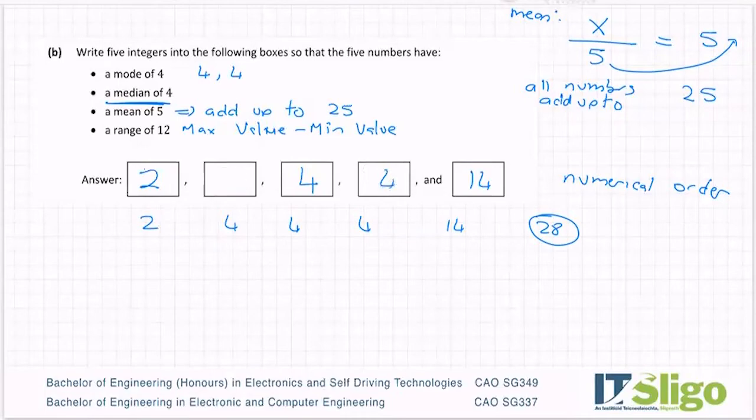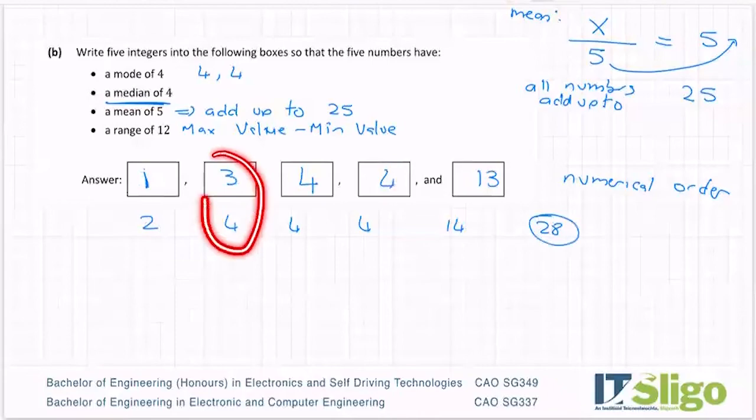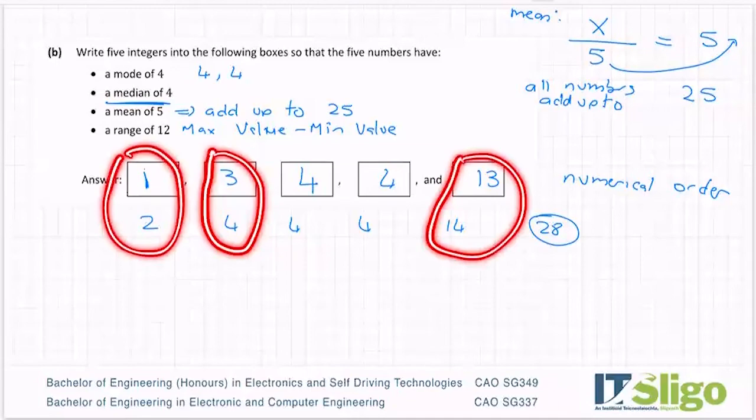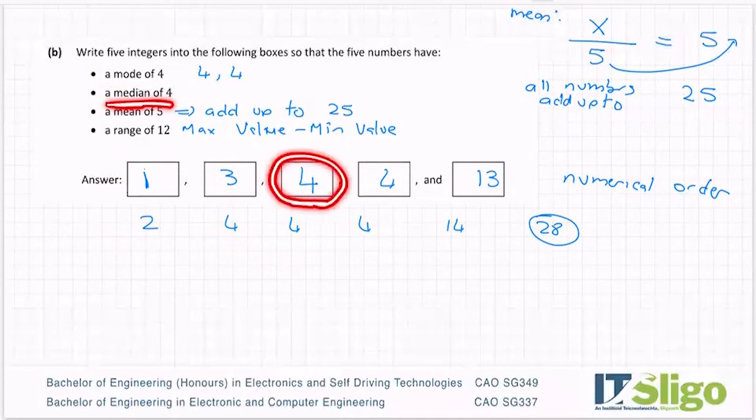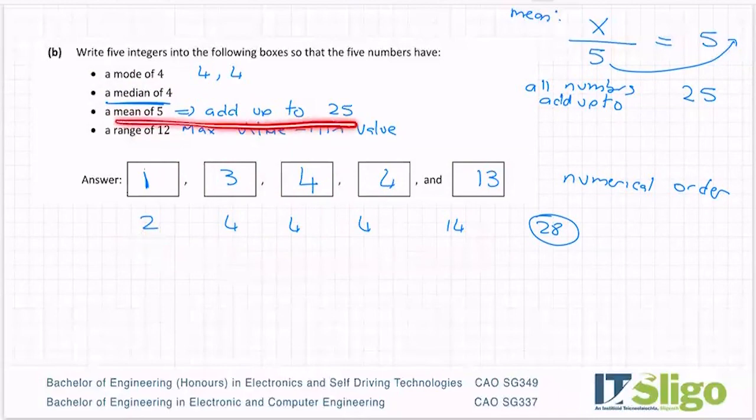Let me leave that 4 there. Let me change him to 3. Let me change him to 1. So he has to be a 13. So remember, he was 3 too much. So I subtracted 1 from here, I subtracted 1 from here, I subtracted 1 from here. So let's go through our conditions. A mode of 4, check. That's good. Median of 4, the value in the middle. So he's fine. Range of 12, 13 minus 1 is 12. Do they add up to 25?